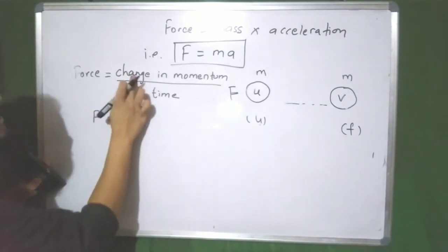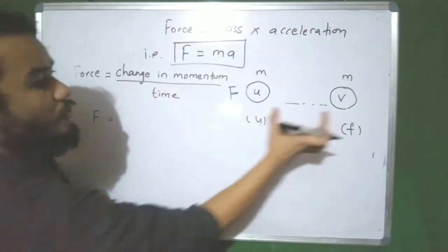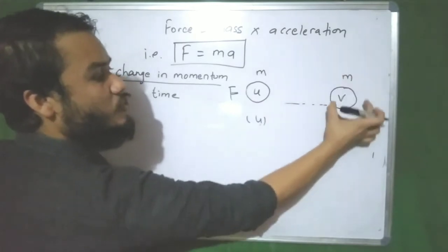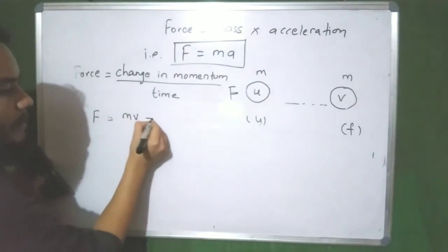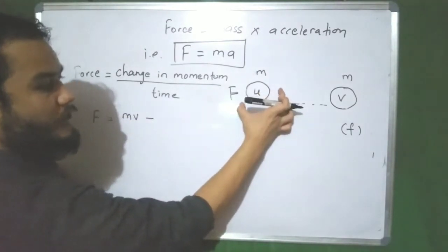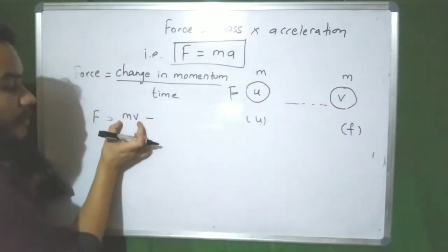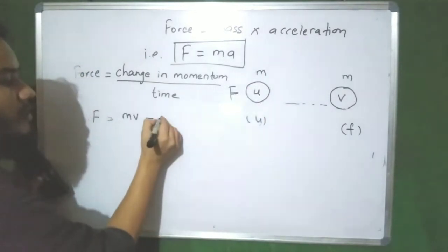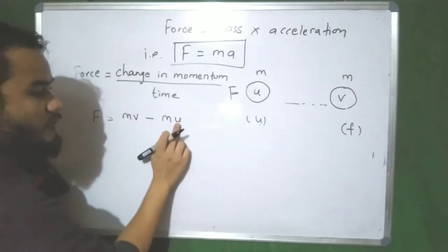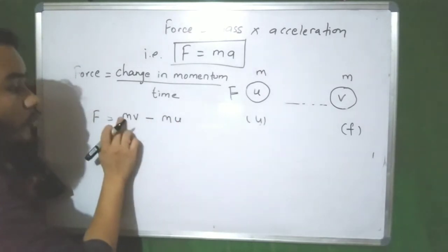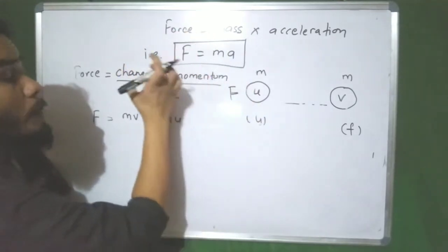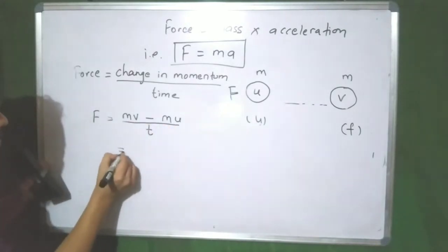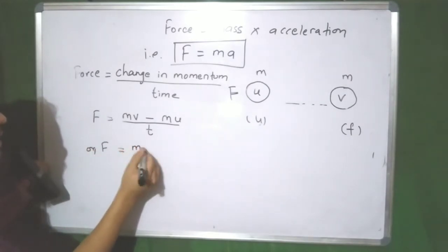Force is equal to change in momentum, which means final momentum minus initial momentum. Final momentum is mass times final velocity, and initial momentum is mass times initial velocity. So the change in momentum is mass times final velocity (v) minus mass times initial velocity (u).